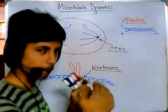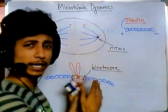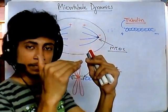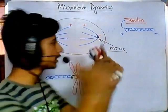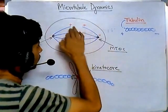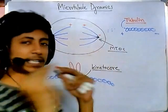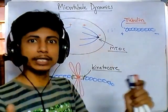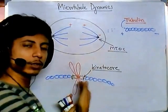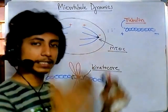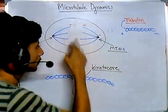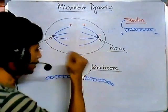The microtubules hold the sister chromatids from the kinetochore from both sides. They are simultaneously shrinking and growing — if one microtubule is shrinking, the other is growing, to maintain a kind of balance. If both of them start to shrink simultaneously, it will create a lot of tension on the sister chromatid and the chromosome may be damaged. Therefore it needs to maintain this dynamic balance of growing and shrinking.